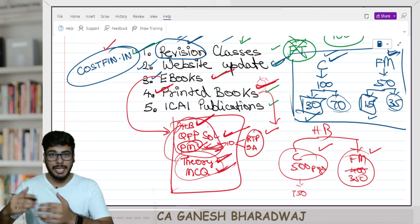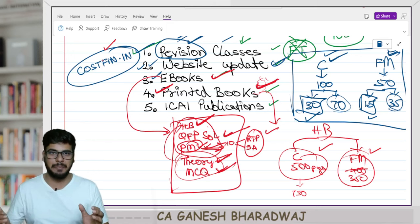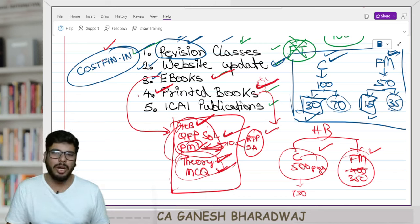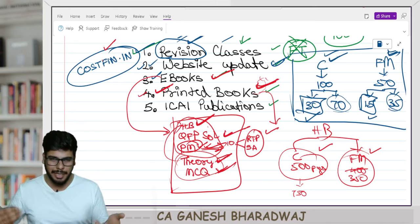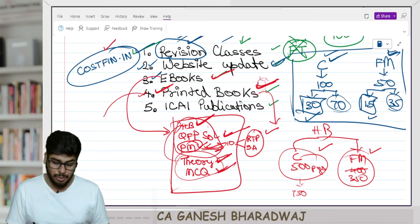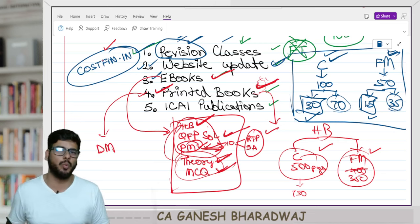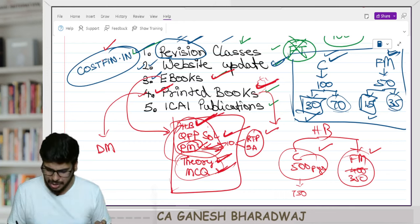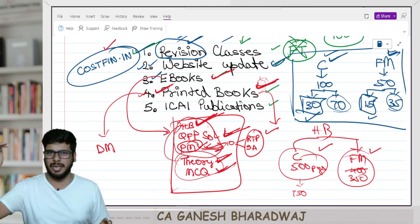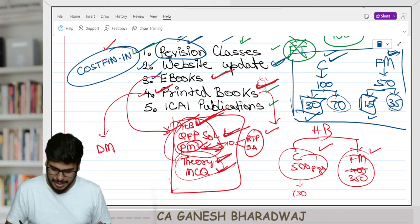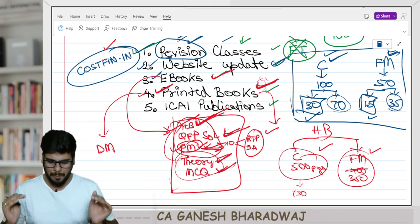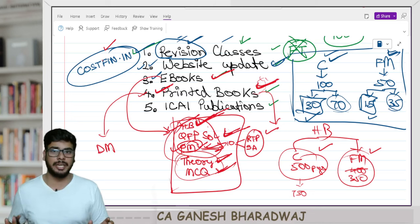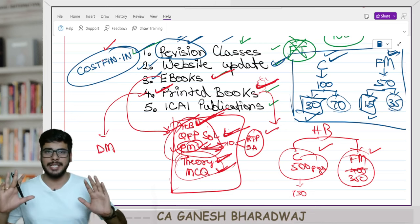In our new website, we will have a separate section for printed materials where you can place orders. If you want to place an order right now without waiting for the new website, just send me a direct message on WhatsApp. Tell me which book you want. As of now we have the handbook ready. We are predominantly planning to print the handbook and practice manual — these are the big books. If you're interested, send me a message on WhatsApp and I will personally reply.